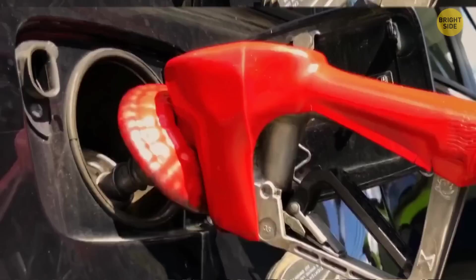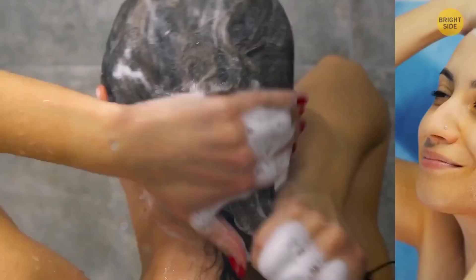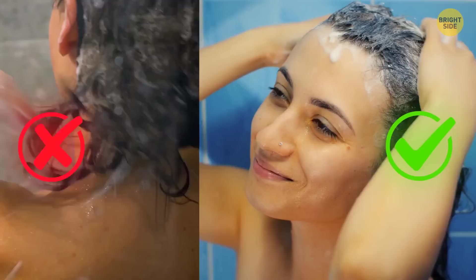You are probably using shampoo wrong all the time. Well, the main thing you should know is that you don't apply it directly on your hair. You gotta apply it onto the roots only. The foam that you make is enough to clean your hair.